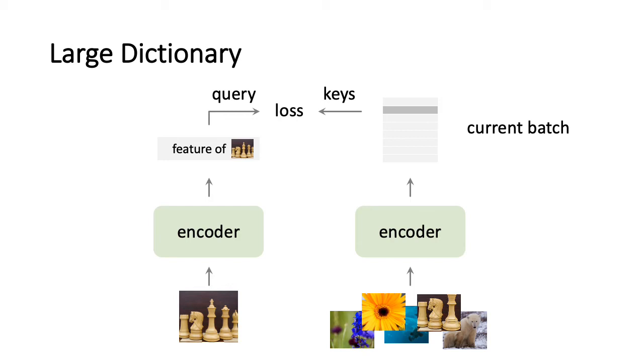In the contrastive learning framework, to have a large dictionary, we maintain the features in the previous batch as a queue. The dictionary consists of the current and previous batches, and it is not limited by the batch size.